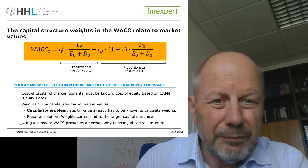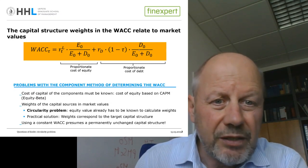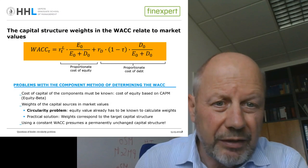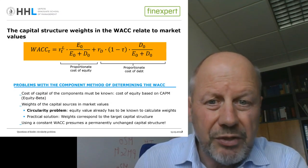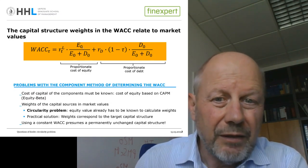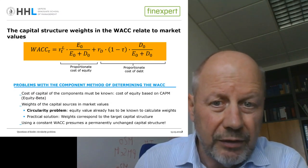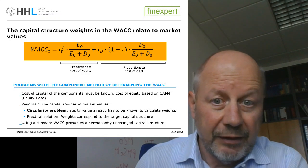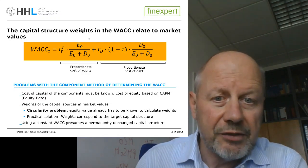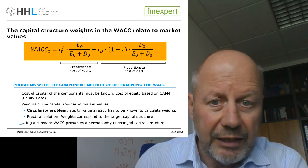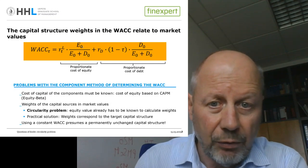The circularity problem stems from the fact that, according to this equation, these two weights should be measured in market values. That creates a particular problem because it would require us to know the value of equity that we are just on our way to calculate. We are just on our way to calculate the value of the enterprise knowing the WACC, and then finally the result is the value of the equity. So that is the circularity problem — we would need to know something that we are just trying to calculate, that is the value of our equity.